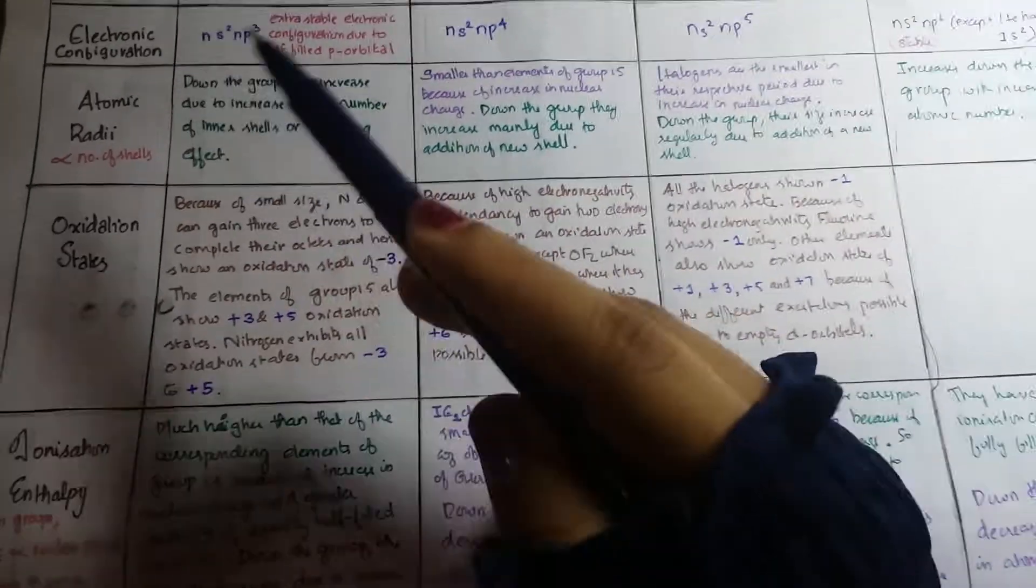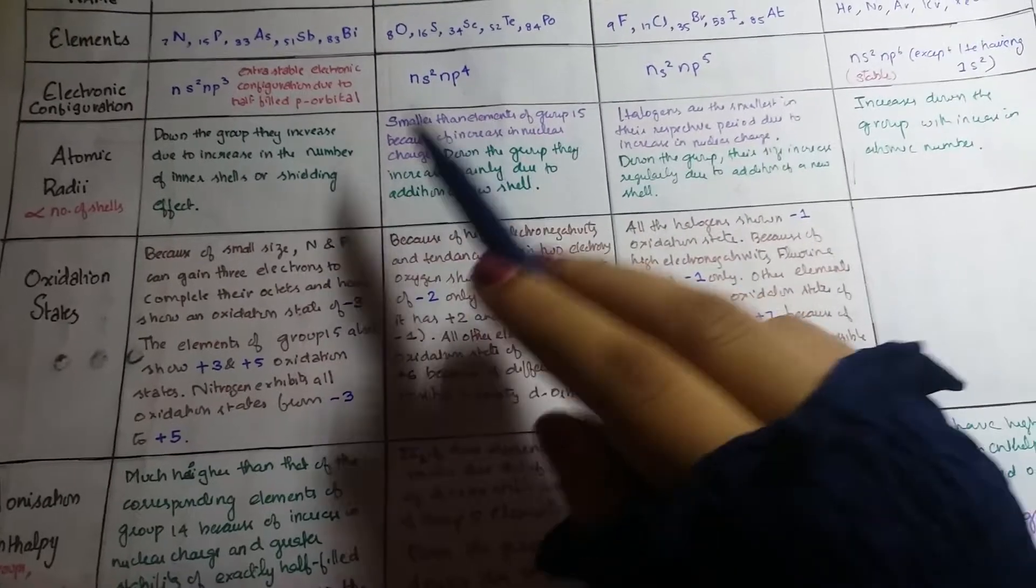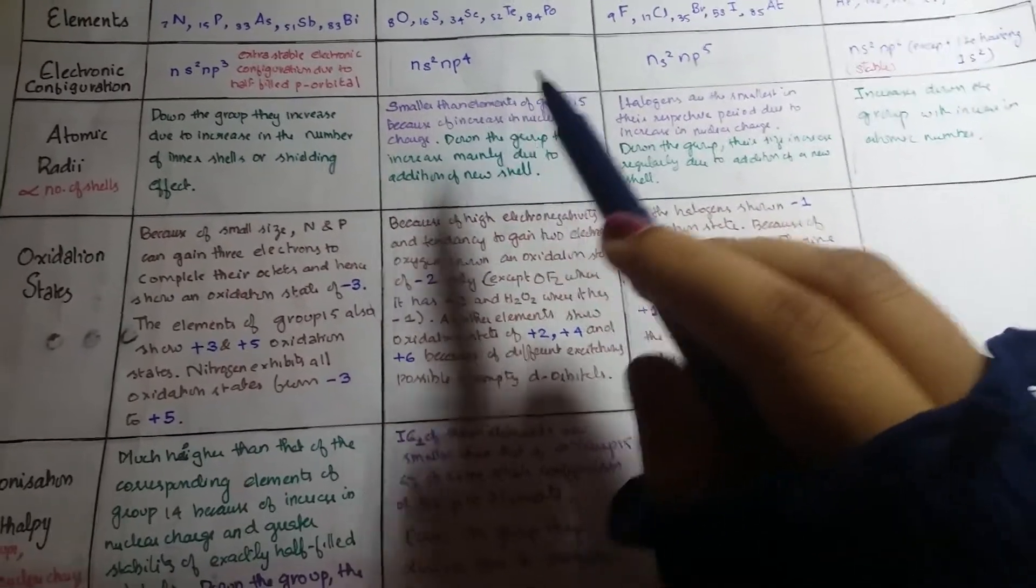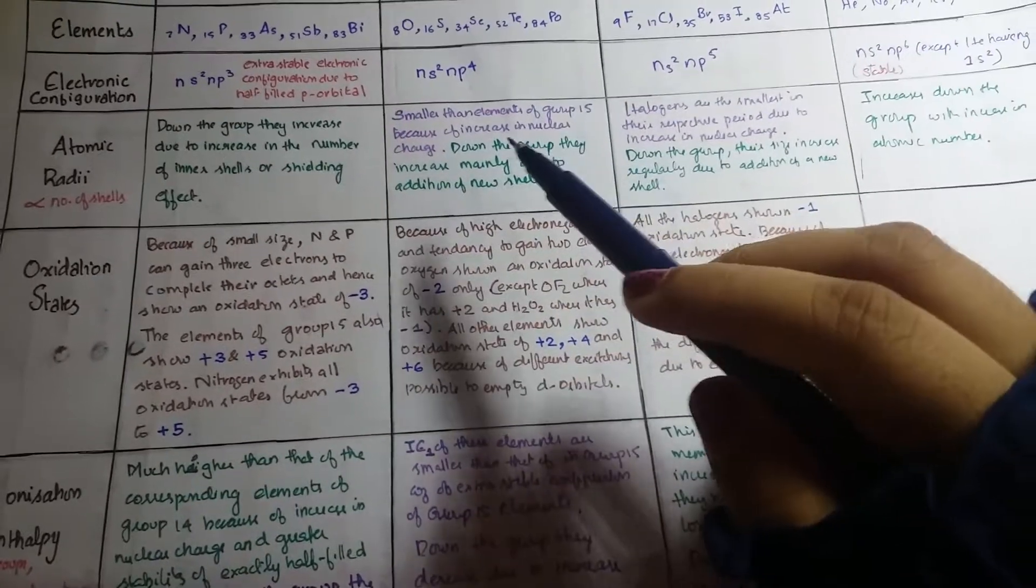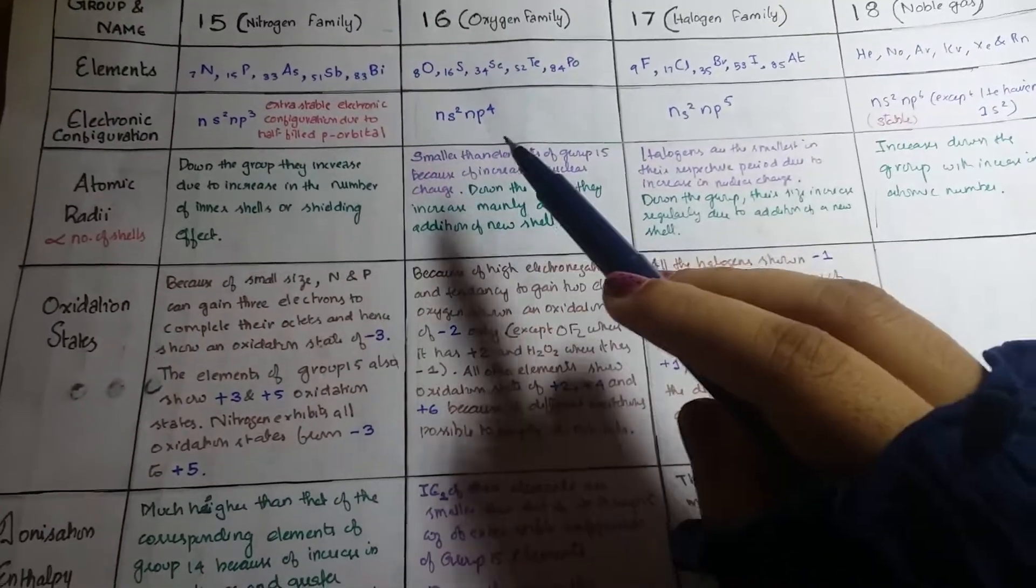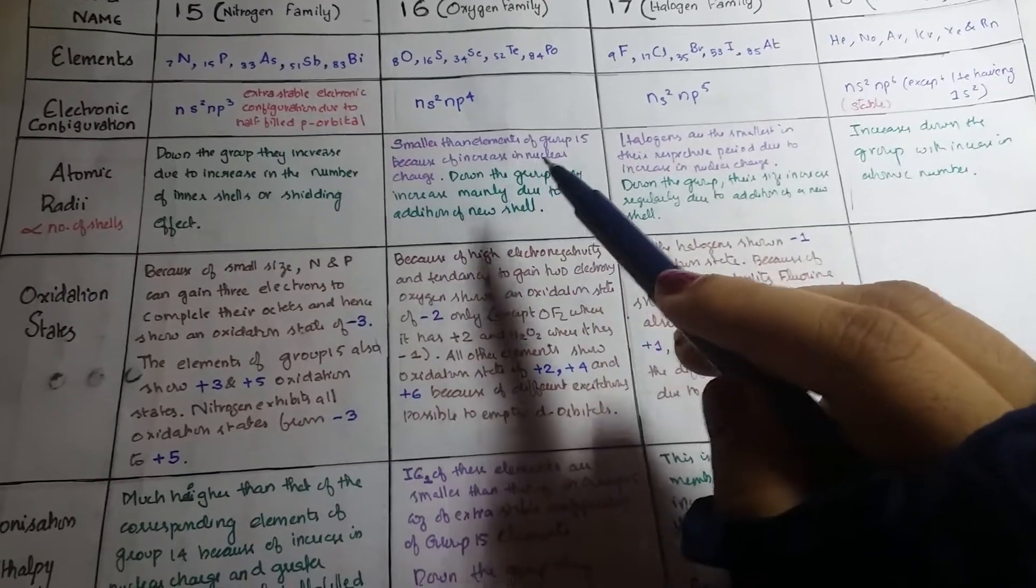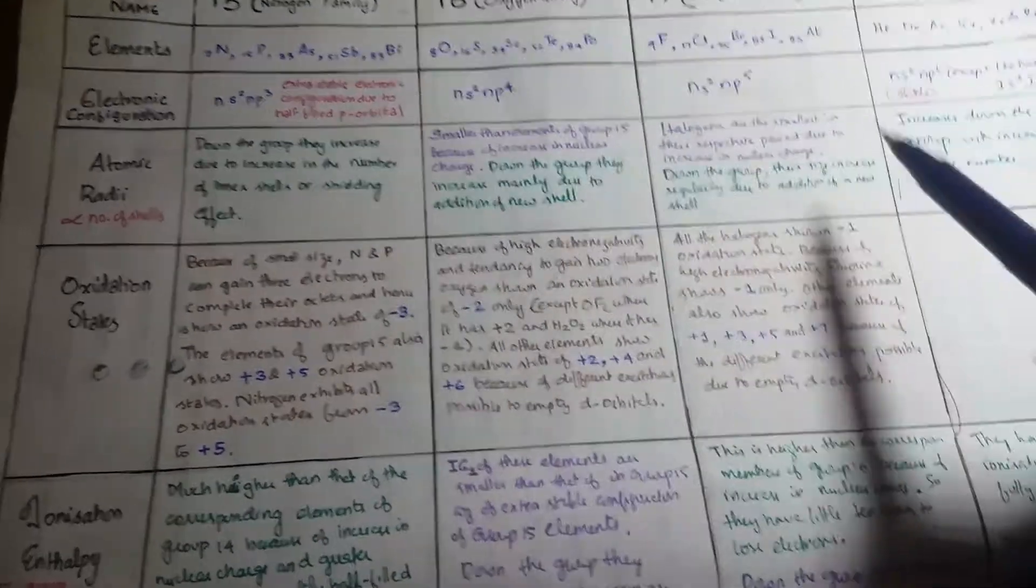And as we already see, the green color represents the increase, so atomic radii increases down the group in every group. And then this violet color is for indicating the decrease, right? So smaller than elements of - these in group 16 are smaller than the elements of group 15 because of increase in nuclear charge. So that also you can have a look.